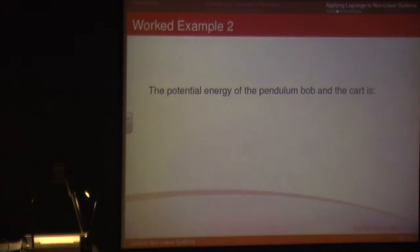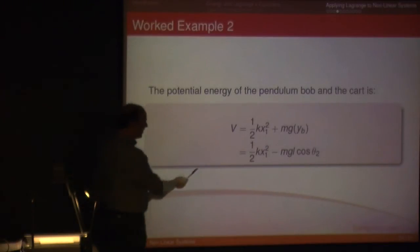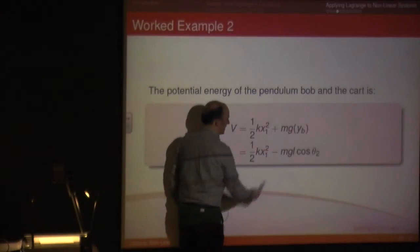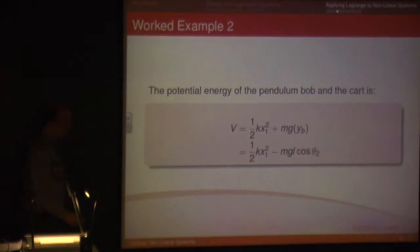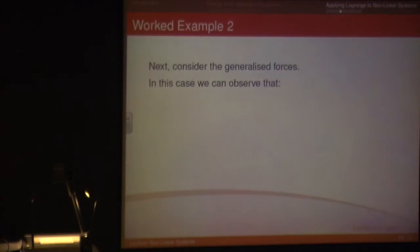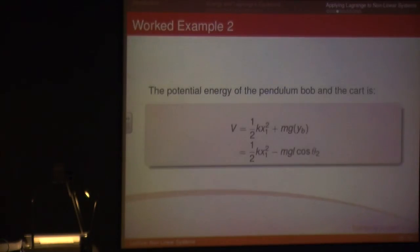Fortunately, V is a little bit easier. There's no potential energy attached to the mass except for the spring, so we have to include that. And obviously, Mgh is the gravitational potential energy to do with the pendulum. Which is what, as we saw before, minus Mgl cosine of theta. And so T minus V we'll come to in a second.